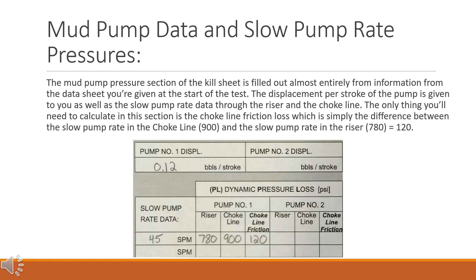Mud pump data and slow pump rate pressures. The mud pump pressure section of the kill sheet is filled out almost entirely from information from the data sheet you're given at the start of the test. The displacement per stroke of the pump is given to you, as well as the slow pump rate data through the riser and the choke line. The only thing you'll need to calculate in this section is the choke line friction loss, which is simply the difference between the slow pump rate in the choke line (900) and the slow pump rate in the riser (780), equals 120.